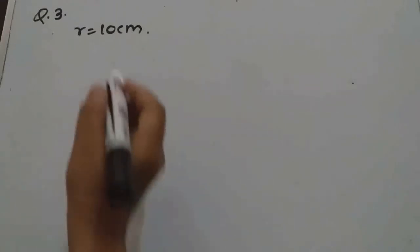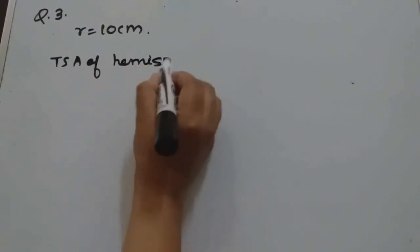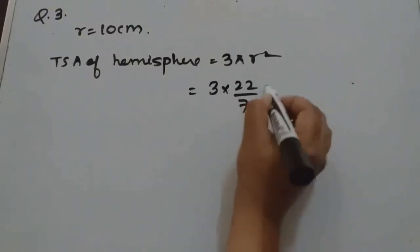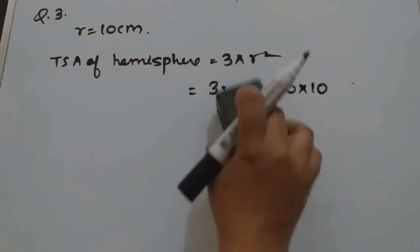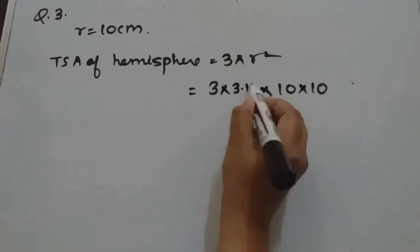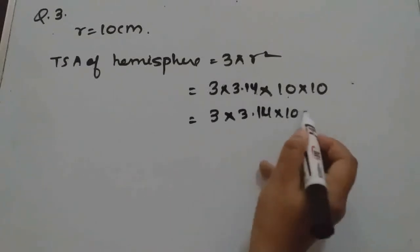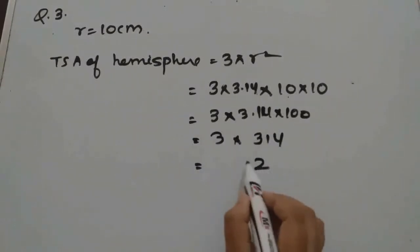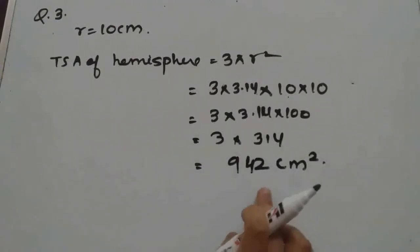Question 3: Find the total surface area of a hemisphere of radius 10 cm. We know total surface area of a hemisphere is 3πr². With r = 10, we get 3 × 3.14 × 10 × 10. Multiplying 3.14 by 100 shifts the decimal, giving 3 × 314 = 942 cm².